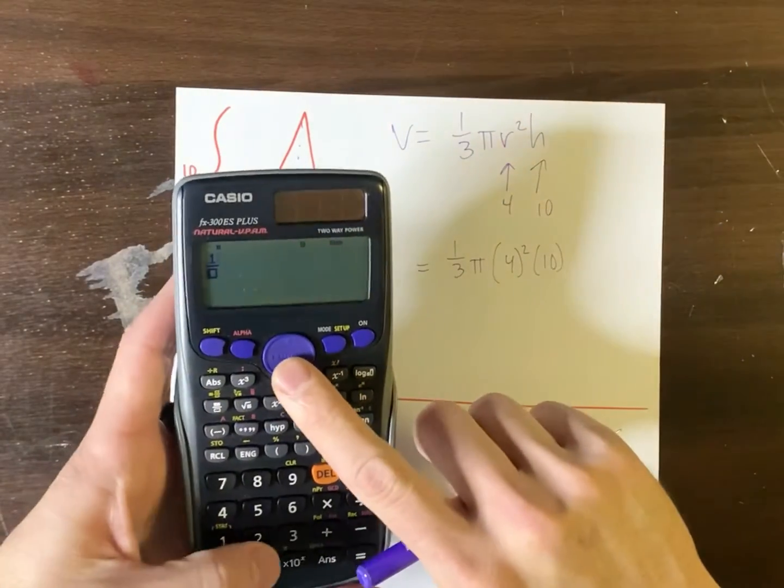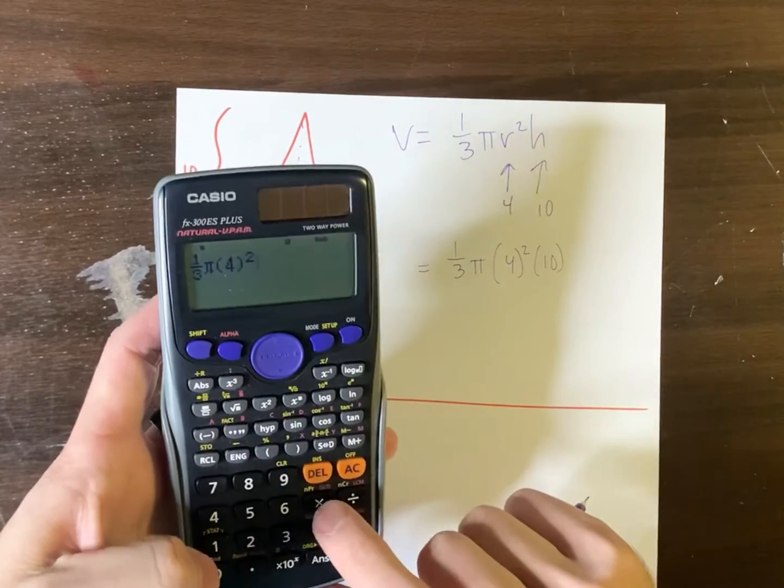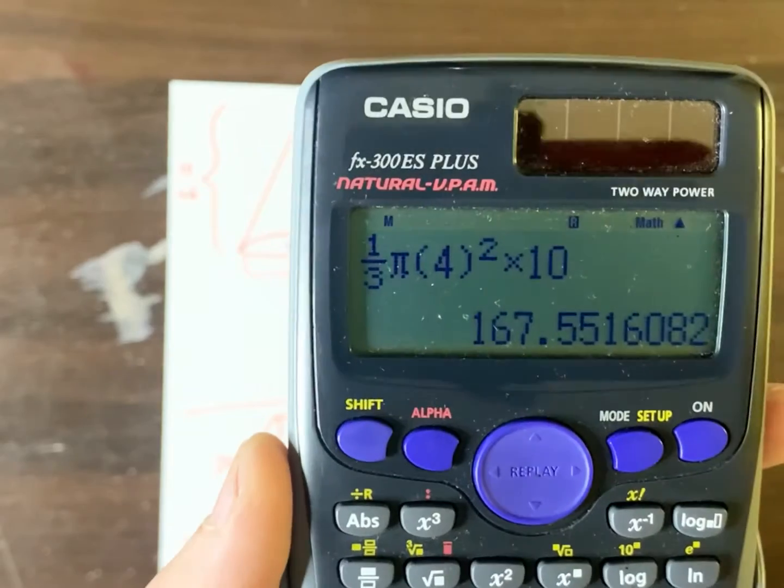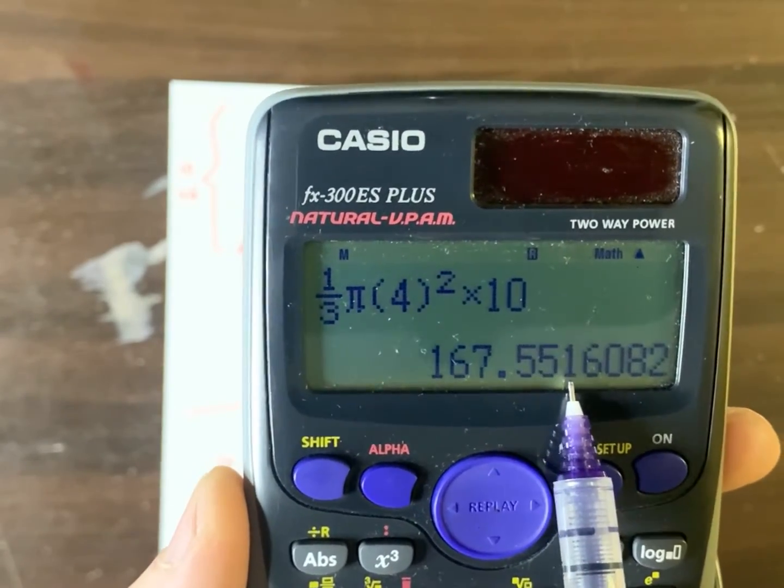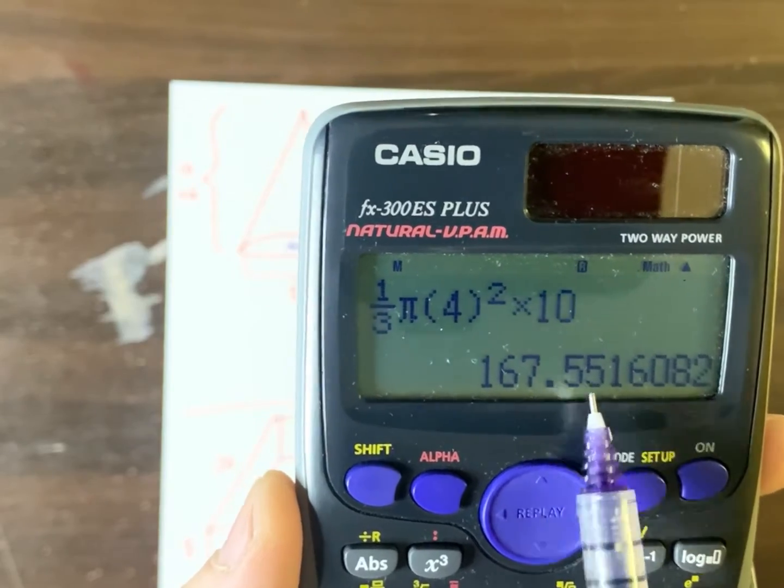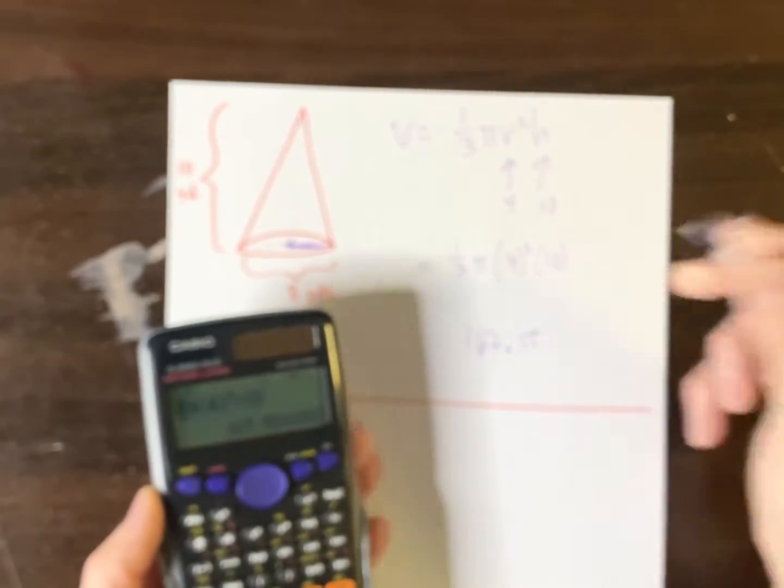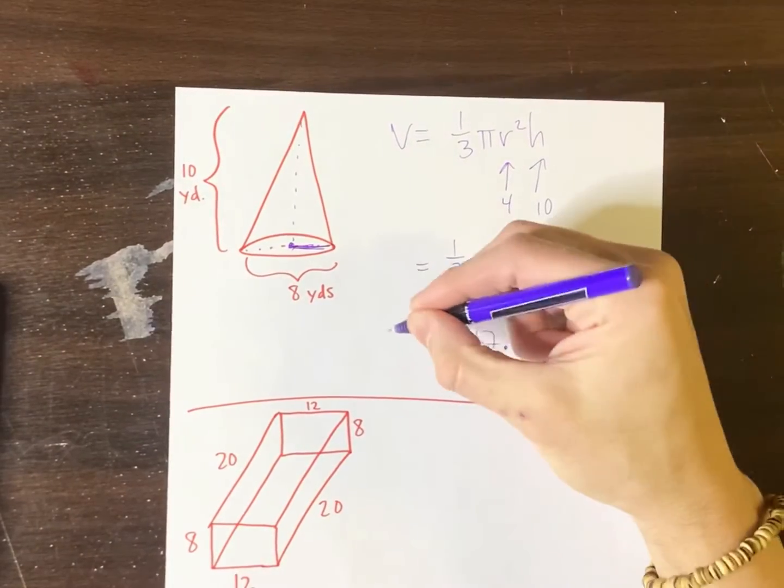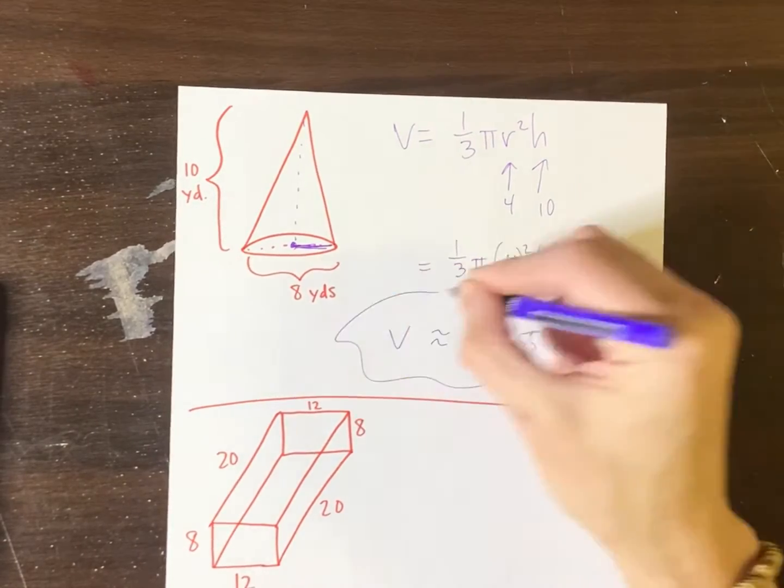And you know what? We're probably getting the hang of it now, just by looking here. But let's keep going. So we have like that, like that. And let's round this bad boy. So that's about, ooh, that's going to stay, because that's a one. So that's going to stay five. So I got 167.55. So that is the approximate volume in cubic yards for this cone.